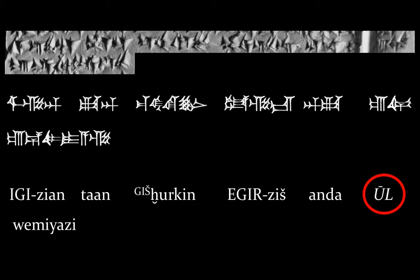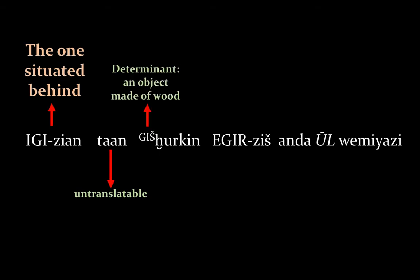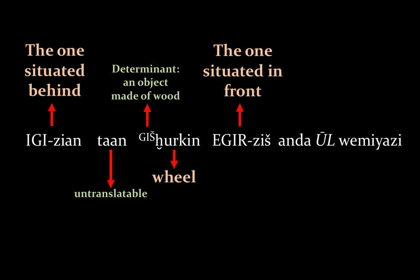So now we can look at the text word by word. 'Igizian' is a blend of a Sumerian word and a Hittite word; it means 'the one situated behind'. 'Tan' is untranslatable and is one of those particles commonly used in Hittite to emphasize a sentence. 'Gis' is a Sumerian word used here as a determinant — a word that is not meant to be read and just tells us that the following word is an object made of wood. 'Hurkin' is the object and it means 'wheel'. 'Egirzis', another blend of Sumerian and Hittite, means 'the one situated in front'. And 'vremiazi', together, means 'overtakes'.